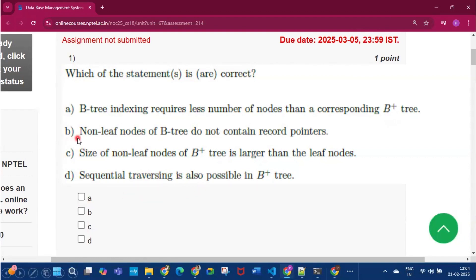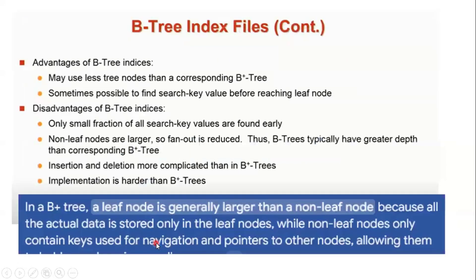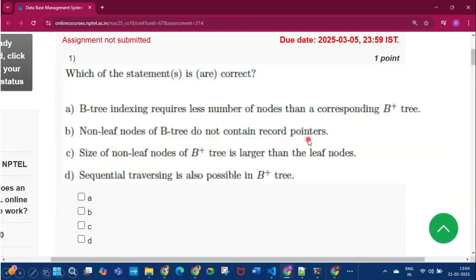The second option states that non-leaf nodes of a B-tree do not contain record pointers. However, in a B-tree, non-leaf node pointers (where i is from 1 to m-1) are bucket, file, or record pointers. So non-leaf nodes do contain record pointers, making option B false.